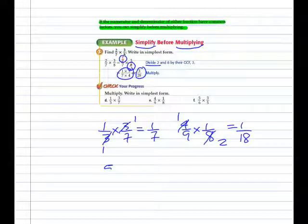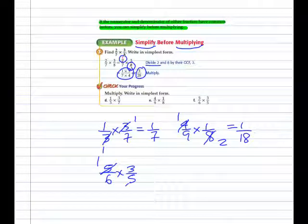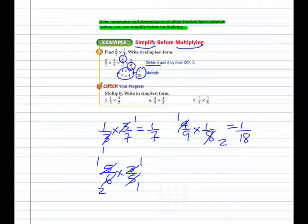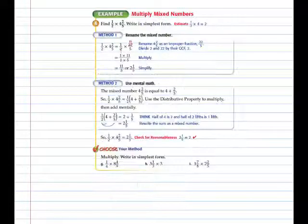Example F: five-sixths times three-fifths. This is one of those rare occasions where we can simplify both ways. Divide both fives by five, giving us one. Divide the three and the six each by three — six divided by three is two. So instead of fifteen over thirty, we have the simplified fraction one over two.